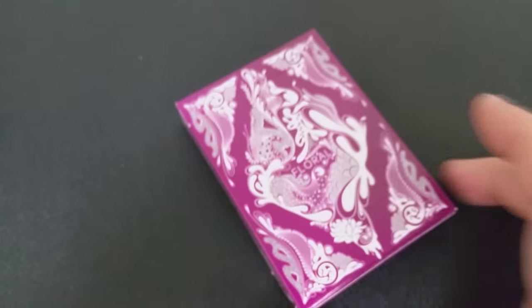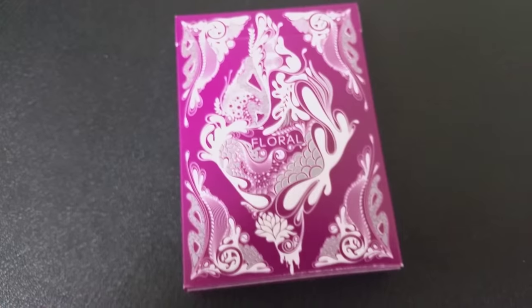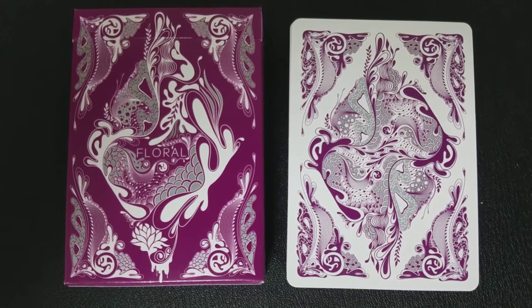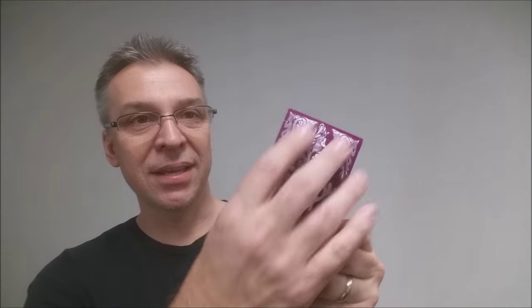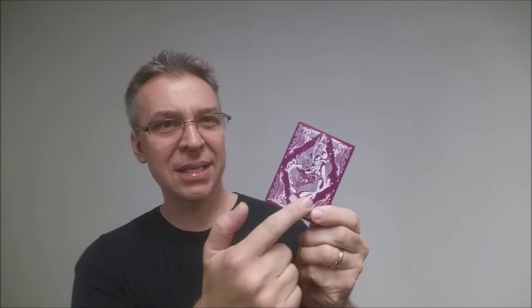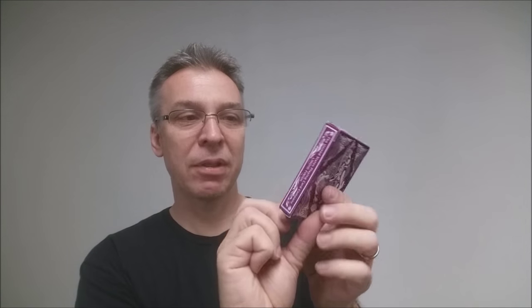This deck is 100% custom artwork. You've got metallic inks on the tuck box, the backs of the cards, and the faces, a nice thick tuck stock paper, and a custom tuck seal. The front of the tuck case is kind of a diamond pattern. You can see that with four little triangle shapes in the corners. The back design mirrors it so it's the same on the front and the back. And it does say floral right there in the center.